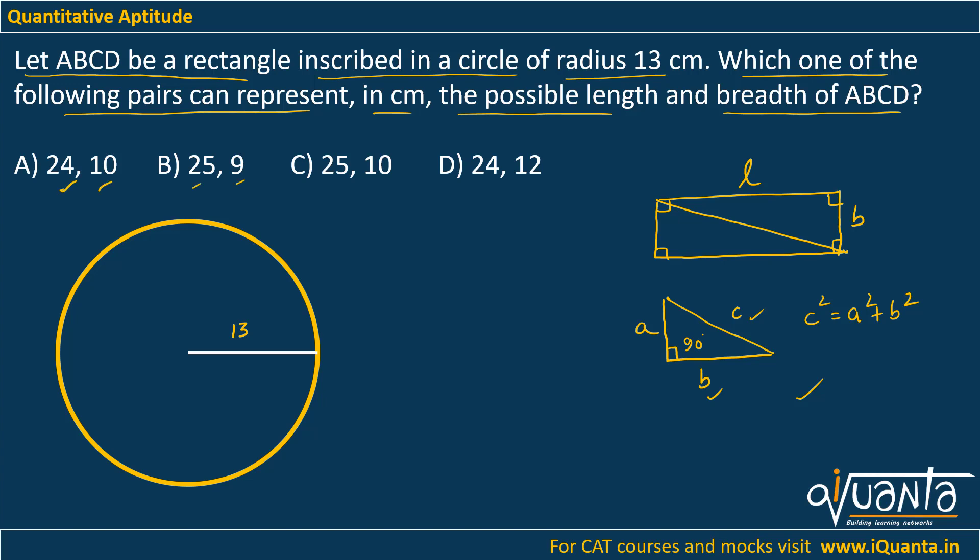Now how can you inscribe a rectangle in a circle? For example, this is a circle. You can inscribe the rectangle like this. This will be the length of the rectangle, this will be the breadth of the rectangle, and this will be the diagonal.